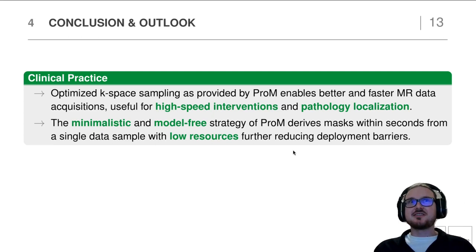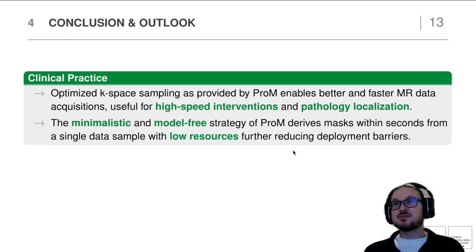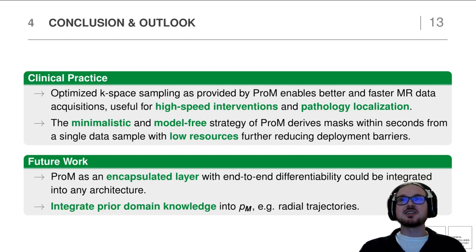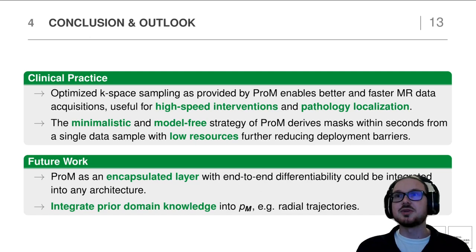In conclusion, optimized k-space-based sampling as provided by our method enables better and faster MR data acquisition, which could be useful for high-speed interventions and pathology localization. Additionally, our minimalistic and model-free strategy derives masks in seconds, as we don't use any large neural network, using only low resources which reduces deployment barriers. In future work, we would like to investigate PROM as an encapsulated layer in larger architectures — for example, jointly optimizing the reconstruction itself — and also integrate prior domain knowledge into our prior distribution, such as using radial trajectories. Thank you for listening and I'll see you at my poster!